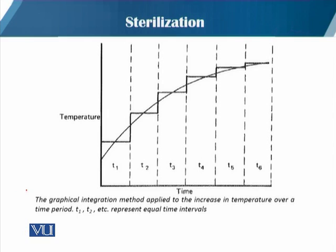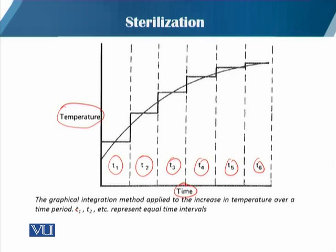On the y-axis is temperature and on the x-axis is time. The time axis is divided into increments T1, T2, T3, T4, T5, T6, and so on. This is the graphical integration method applied to the increase in temperature. With the passage of time, temperature is gradually increased. Richards suggested a maximum of 30 intervals as a suitable number.